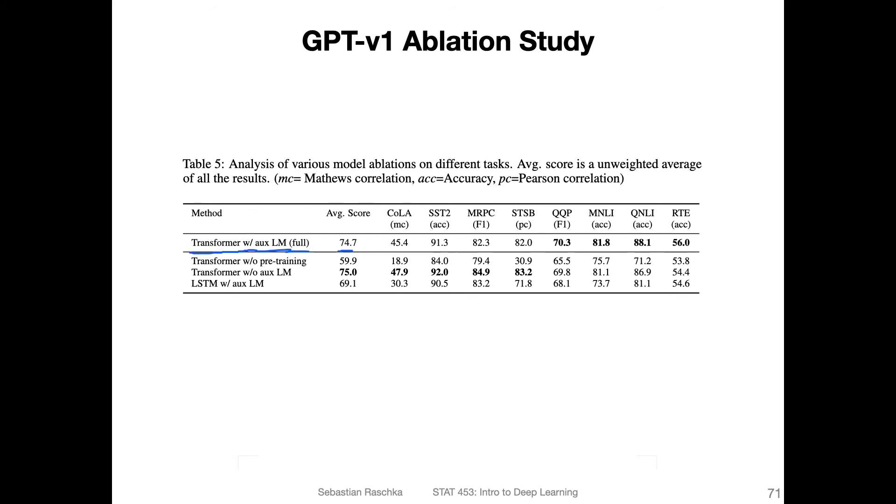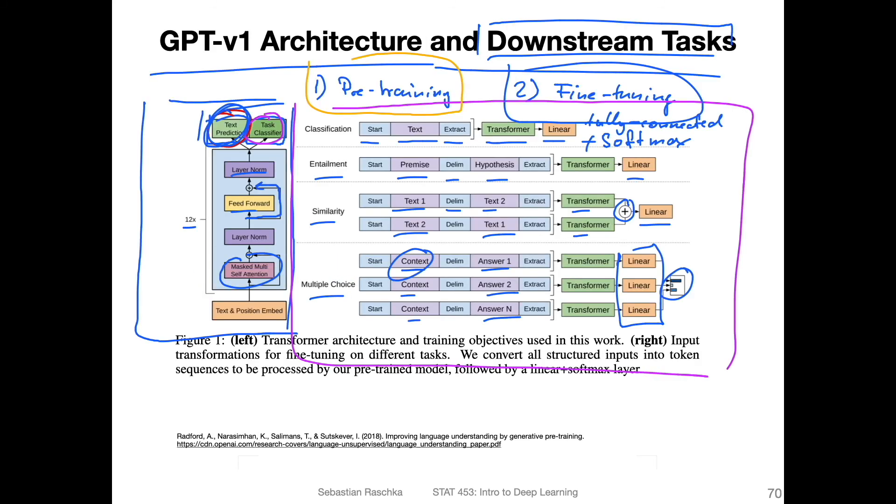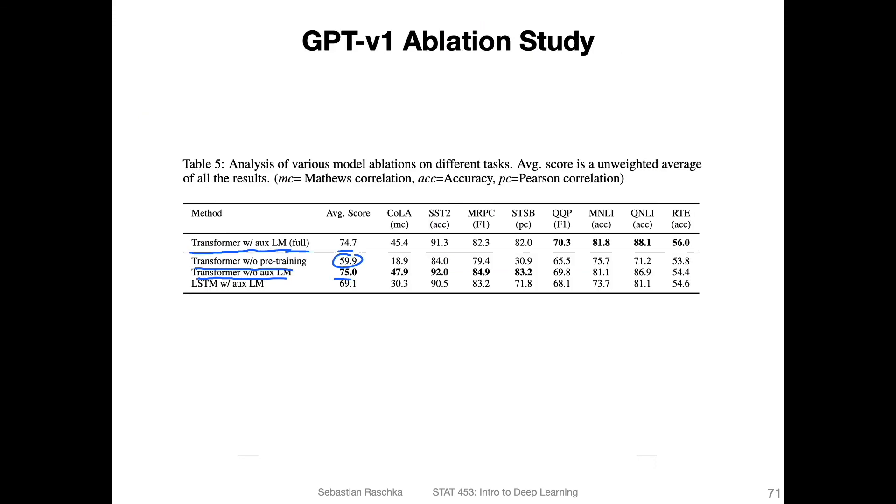The transformer without pre-training, just doing the fine-tuning without pre-training, you can see that the transformer model without the pre-training is significantly or substantially worse. The pre-training really helps. Then they have a transformer without the auxiliary language model. You can see it's even a little bit better. If you pre-train the model on the next word prediction and then get rid of this for the fine-tuning and just focus on the fine-tuning, you can see it's even a little bit better, but not on all tasks. It's better on some tasks but not on others.